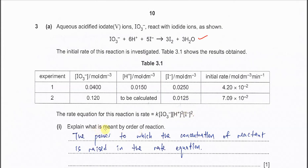Explain what is meant by order of reaction. It is the power to which the concentration of the reactant is raised in the rate equation. From this rate equation, iodate is first order because it has power 1, H⁺ is second order because it is squared, and iodide is second order because it is squared.